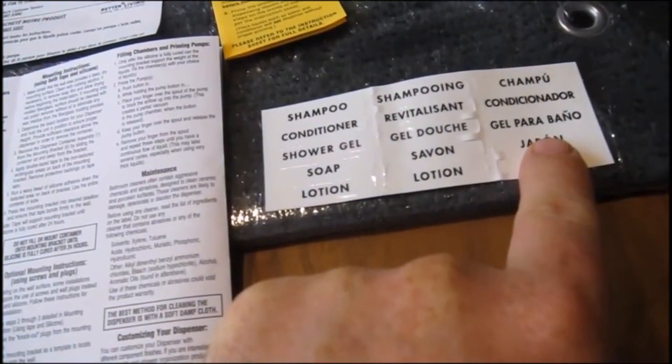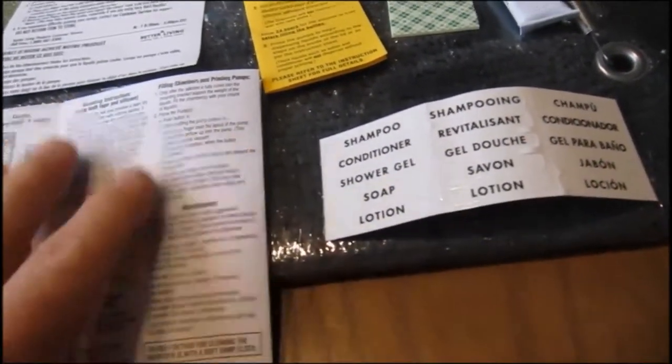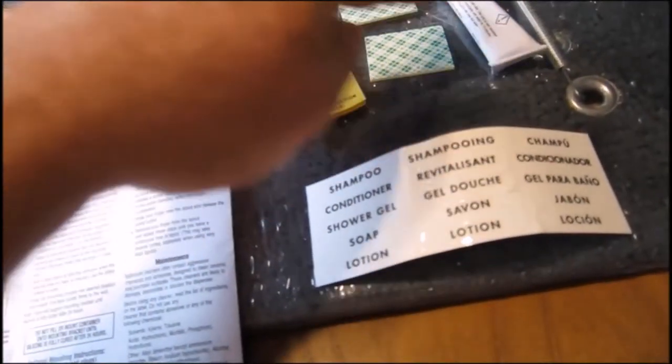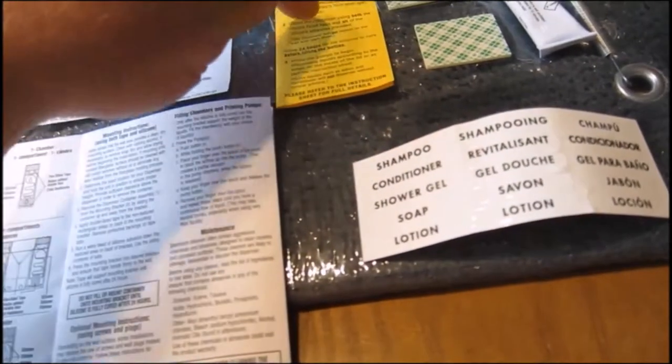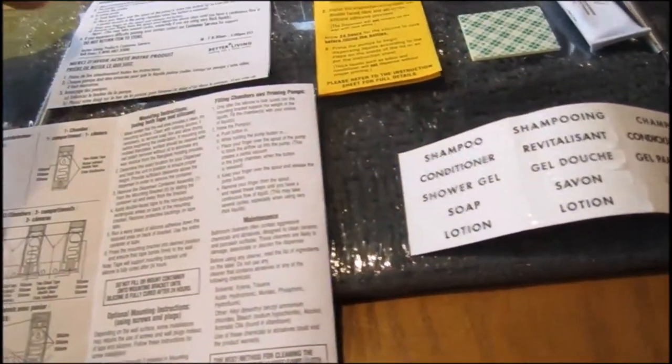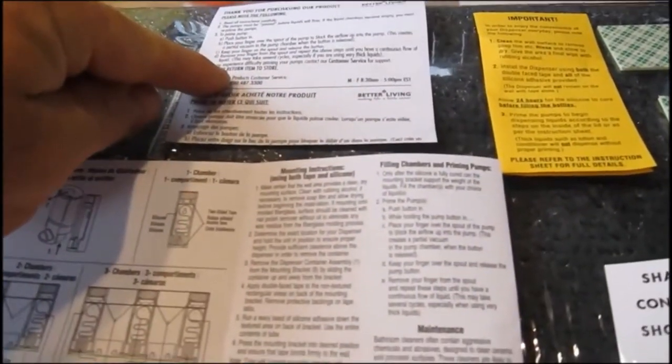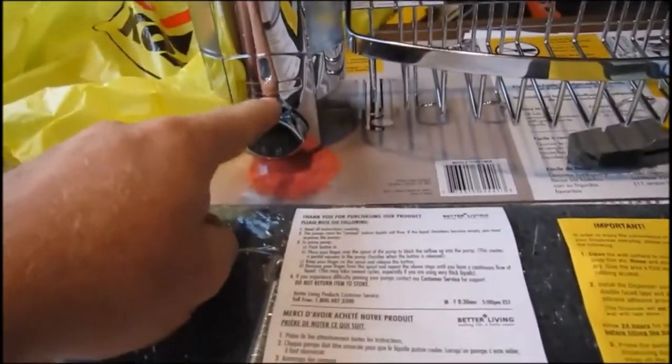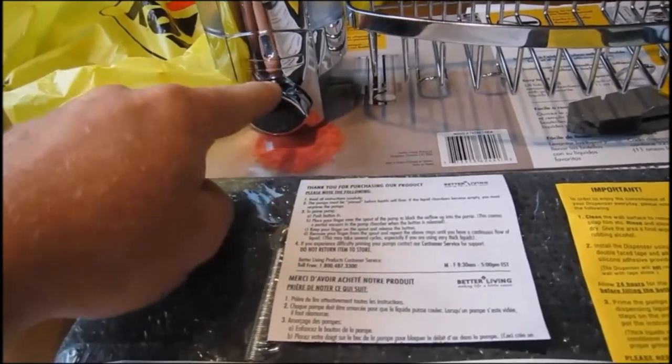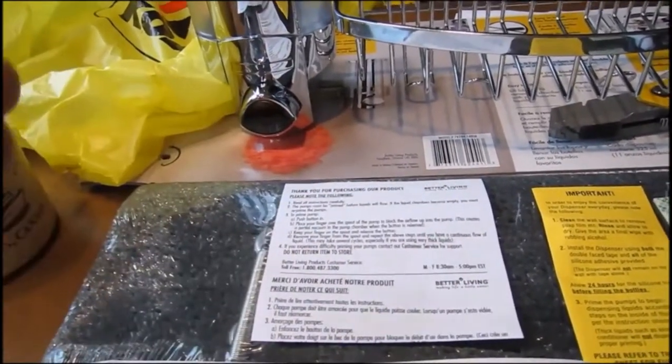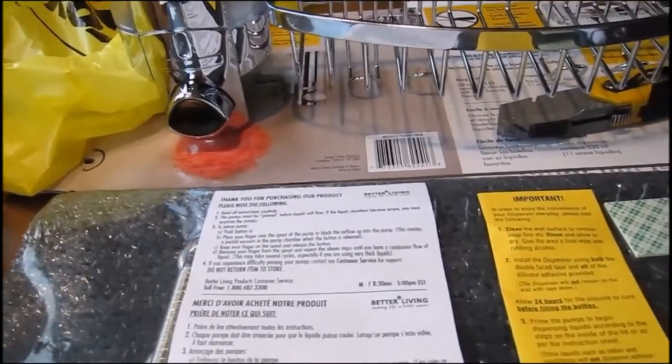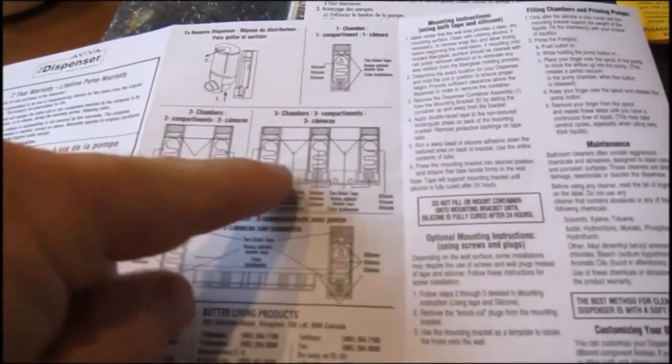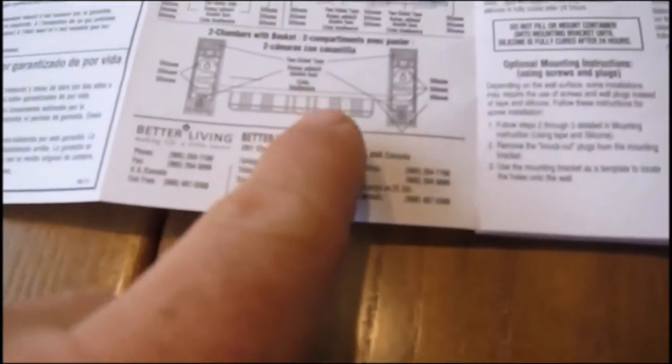It also has some adhesive, some double-sided tape, a little important notice here. Thank you for purchasing the product and how to get this to start flowing. It says to hold in, push in, hold your finger on the bottom. Anyway, the purpose of that is to get the liquid flowing. And then of course the mounting instructions here for various types: single, double, triple, and what I have here with a basket.